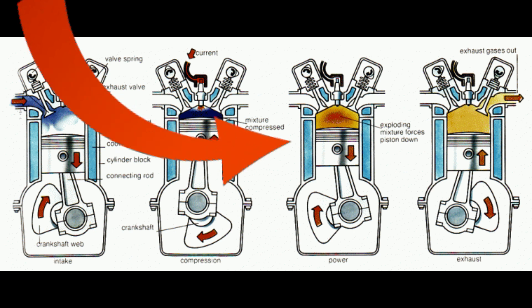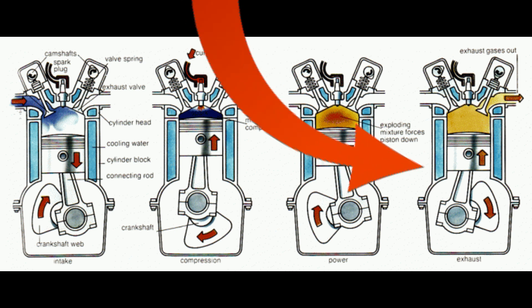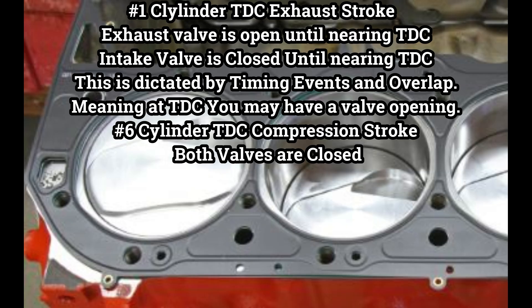This brings us to stroke number three - the power stroke. The air-fuel mixture was combusted and the pressure generated pushes the piston downward. Before the piston reaches bottom dead center, the exhaust valve starts to open. On our final stroke, the piston moves upward with the exhaust valve open to expel all the gases into the atmosphere. As the piston nears top dead center, the exhaust valve is closing while the intake valve is starting to open - this is dependent on the timing events of your camshaft and how much overlap it has. So now we find ourselves at TDC again - this time cylinder number one is at top dead center on the exhaust stroke.